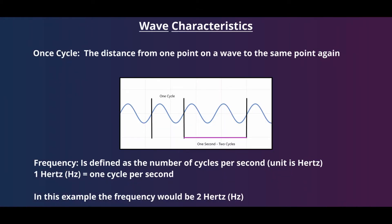There's some terminology used to describe waves that will be helpful in understanding ultrasound. In a wave, we refer to one cycle as the distance from one point on a wave to that same point again. Frequency is defined as the number of cycles that occur within one second. The unit used to represent frequency is the hertz — one hertz equals one cycle per second. For the right side of the graph, we have two cycles occurring in one second, so our frequency would be two hertz.